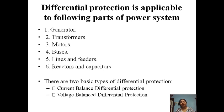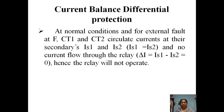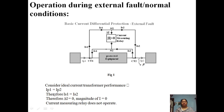Current balance differential protection operates on the circulating current principle. Under normal conditions and for external faults, CT1 and CT2 circulate current in their secondaries, IS1 and IS2. Under normal conditions, CT1 and CT2 secondary currents are equal, so no current flows through the relay and the relay will not operate. Whatever current flows through CT1 also flows through CT2 — the same current flows through the protected equipment.